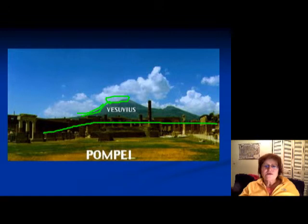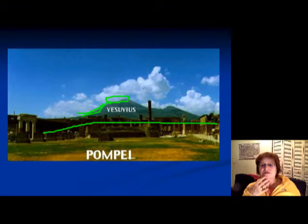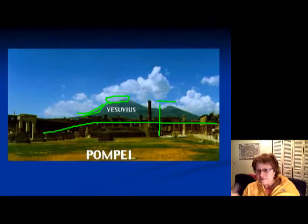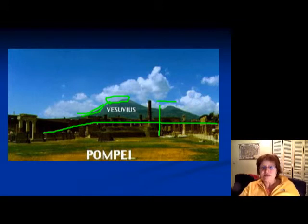Pompeii is the city that was completely destroyed by the eruption of Vesuvius. As you can see, Vesuvius is visible from the city. The city was covered by 90 feet of ash. Someone digging a cellar discovered the ancient city — it's a really interesting story, and there is a movie about it if you want to see it.